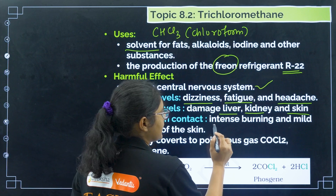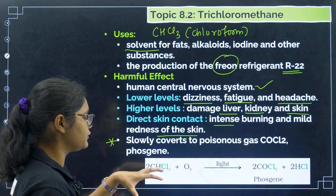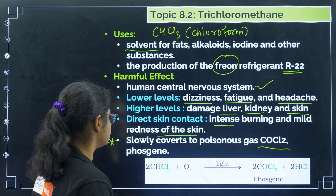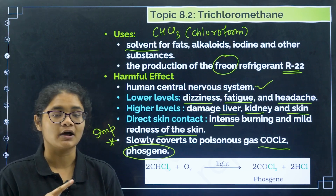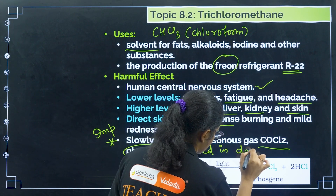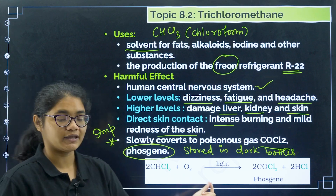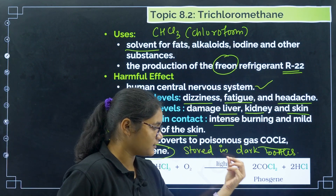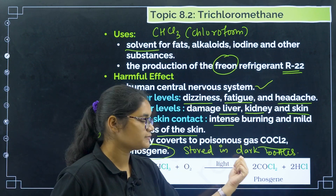One important thing about chloroform: if it is exposed to oxygen or the atmosphere, it slowly gets converted to a poisonous gas, COCl₂, which is called phosgene. This point is important from an exam perspective — questions are also asked about the structure of phosgene and how it is produced. To prevent this, chloroforms are stored in dark bottles. If chloroform is exposed to oxygen for a long period of time, it gets oxidized and converted to the toxic gas COCl₂, called phosgene.